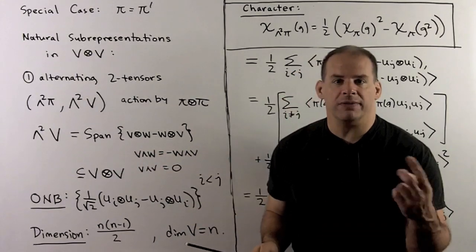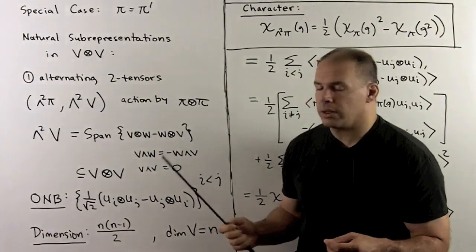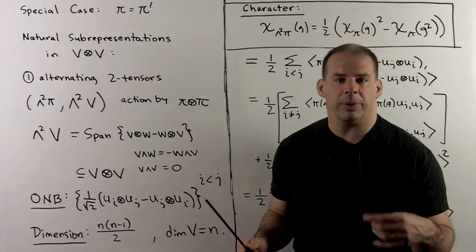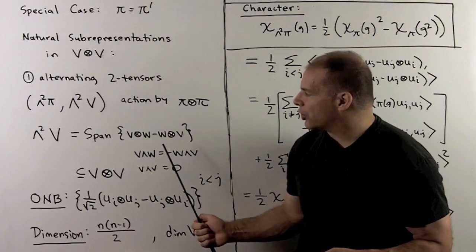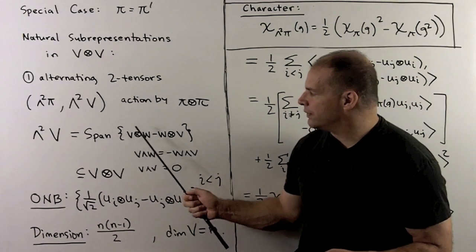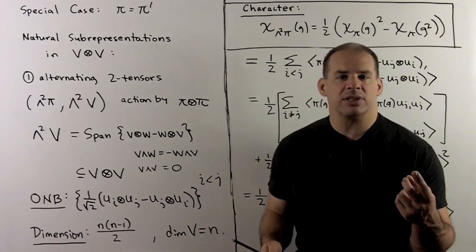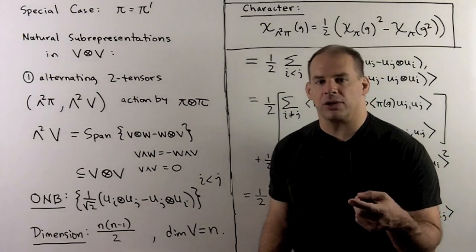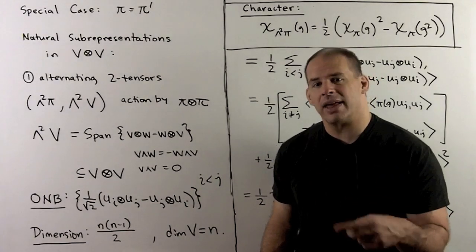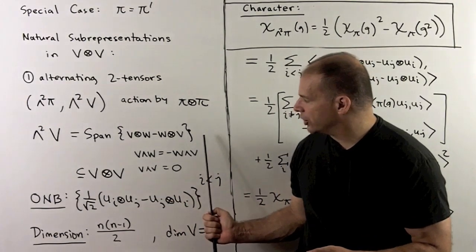Now, to see we have a sub-representation: I pick an element of the group, apply the tensor action to a tensor in this form, so I'm just going to put pi(G) before each V and W in the tensor. That gives me something in the form vector 1 tensor vector 2 minus vector 2 tensor vector 1, so that lives in the span. That means sub-representation.